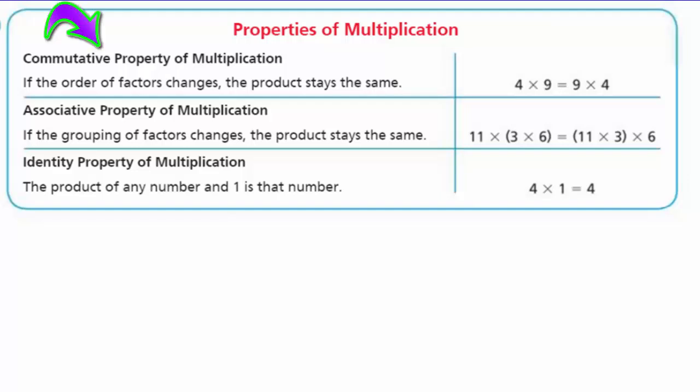It says the commutative property of multiplication simply states if the order of factors, notice, factors changes, the product stays the same. We're just using big fancy words, right? We were using addends, now we're using factors because factor times a factor equals a product. And then you can see the product stays the same. Look at 4 times 9 is equal to 9 times 4. Nothing changed.